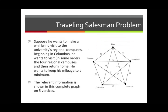Imagine that he wants to make a whirlwind visit to the university's regional campuses. There's a big campus in Columbus and four smaller regional campuses in Lima, Marion, Mansfield, and Newark. President Gee wants to make a visit where he starts from Columbus, visits each of the four regional campuses in one trip, and then returns home to Columbus. He also wants to keep his mileage to a minimum.